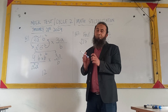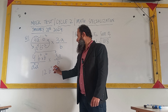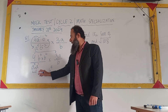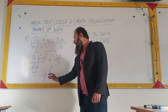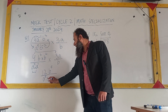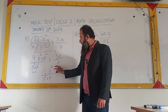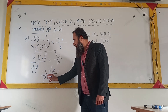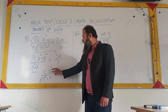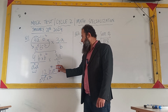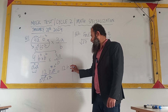We multiply coefficient with coefficient: 3 times 4 equals 12. For the b terms: b power 3 times b power 2 — same base, so we add powers — gives b power 5. For the a terms: a power 4 times a power 1 gives a power 5. After simplification, we cancel one a, leaving a power 4 in the denominator, and cancel one b from b power 5, leaving b power 4 in the numerator. The final answer is 12b⁴ divided by a⁴.